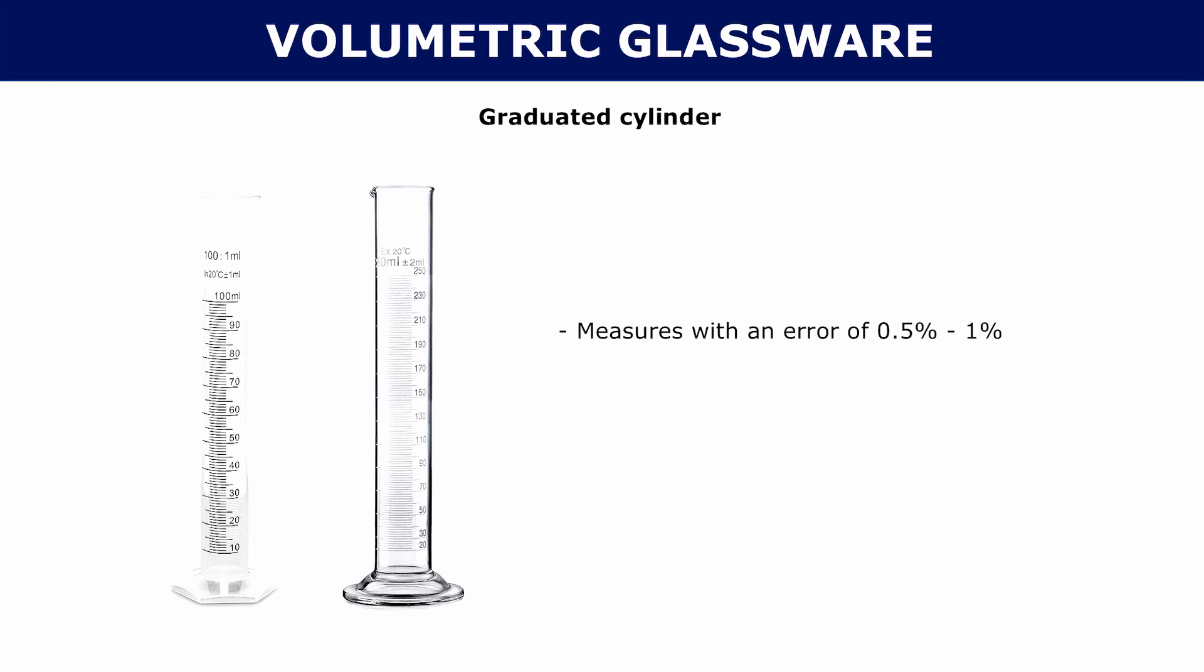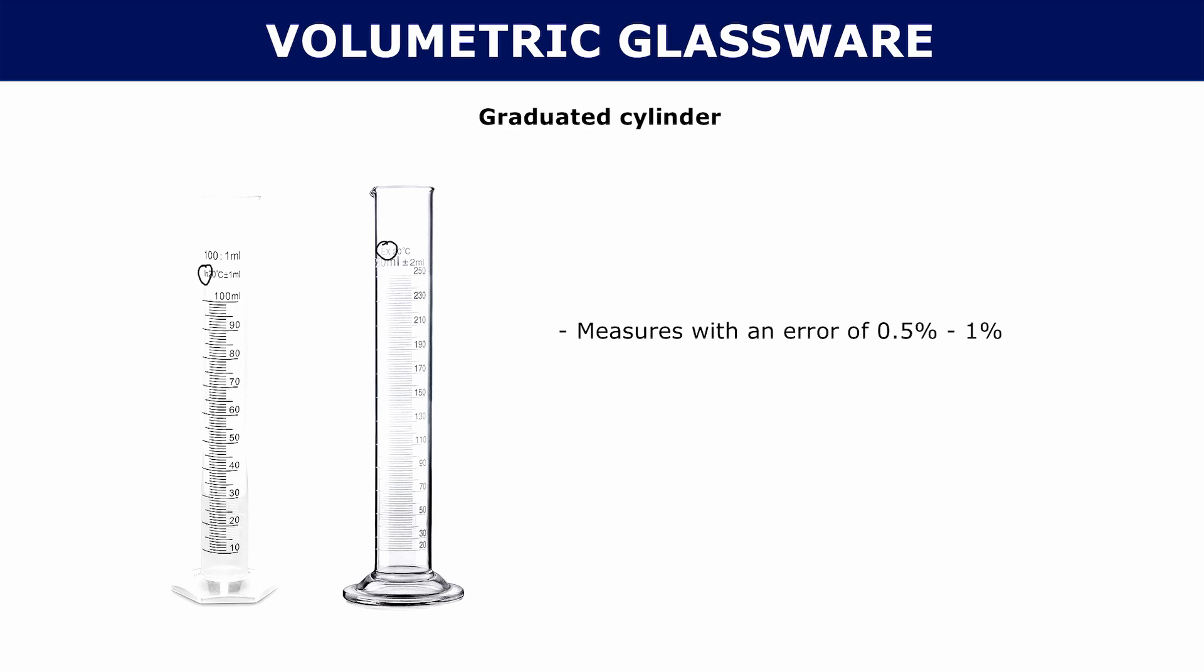A graduated cylinder looks like this. You have a bunch of markings along the side of your tube here. You have two different types of graduated cylinders here, and they have the markings I was talking about before. In the case of the graduated cylinder on the right, you have an X mark. That means it's to dispense. And the one on the left, there's a small IN there. That IN tells you that that is to contain. Graduated cylinders are really accurate. They measure with an error of 0.5% to about 1%.